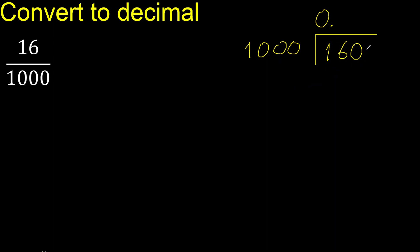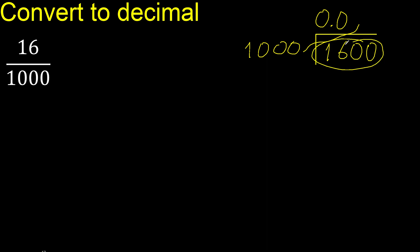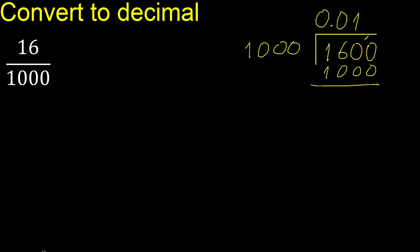0 is less, therefore write 0. 1600 is not less, therefore: 1000 multiplied by which number is nearest to 1600 but not greater? Multiply by 2 is 2000, which is greater, therefore multiply by 1 is 1000. There is no number that goes down, therefore complete — always complete with 0.